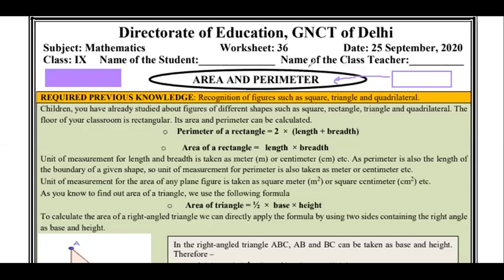The boundary is called Perimeter. If you look at the boundary, the part on the inside that I have covered — that is called Area. It is like paint. The inside covered part is called Area.